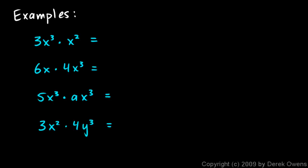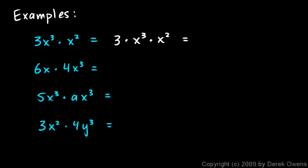Now we'll use these concepts to simplify expressions. For 3x cubed times 3x squared, think of it as 3 times x cubed times 3 times x squared — the 3 is not cubed, only the x is cubed. The x cubed and x squared have the same base, so add the exponents: the result is 3 times x to the fifth, or 3x to the fifth. For 6x times 4x cubed, multiply the 6 and 4 to get 24, and multiply x by x cubed to get x to the fourth, giving 24x to the fourth.